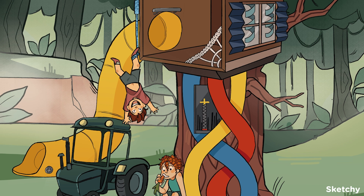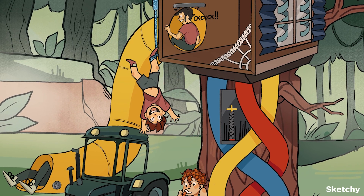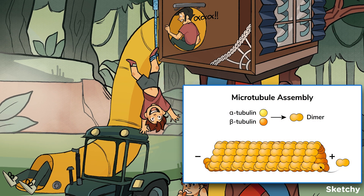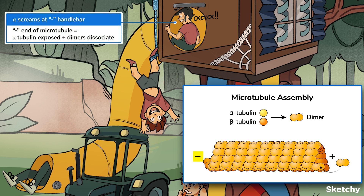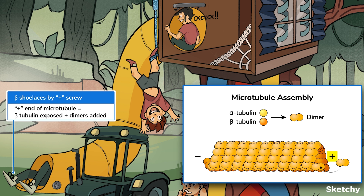Tubulin is the structural protein that forms microtubules. Tubulin proteins pair up into what's known as dimers. Dimers consist of one alpha tubulin bound to one beta tubulin. At the microtubule's minus end, the alpha tubulin is exposed, just like this kid right underneath that minus sign safety bar — it's no wonder they're screaming 'alpha!' At the microtubule's plus end, beta tubulin is exposed, represented by this kid with beta shoelaces, where new tubulin dimers are added.